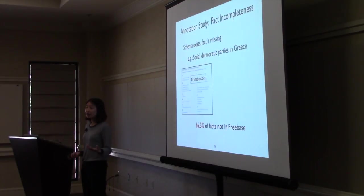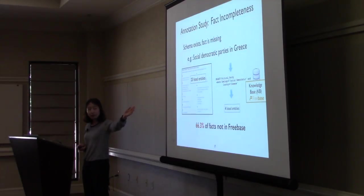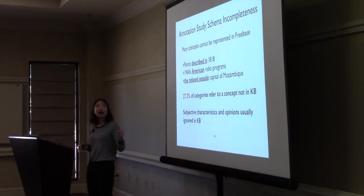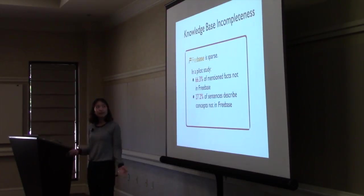First we covered how many of the facts are covered in the knowledge base. For this query, social democratic parties in Greece, Wikipedia lists like 23 entities. But when you execute the gold query into the knowledge base, it only gets four out of it. So about like more than two-thirds of the facts were missing in Freebase. The second we studied was schema incompleteness. We see how many concepts cannot be represented with the Freebase schema. We found this kind of concept described in, or American radio program, the relaxed side, these kind of concepts cannot be represented in the knowledge base. As I said, subjective characteristics and opinions cannot be captured in the knowledge base schema usually.